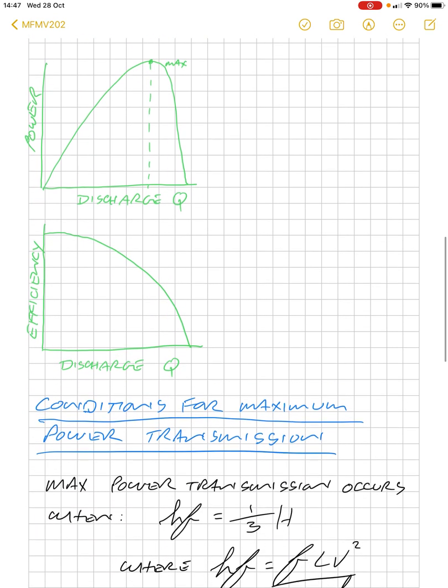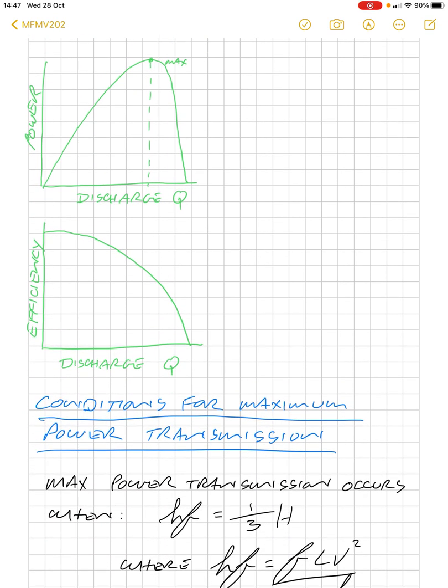And then thirdly, we have a graph showing efficiency and discharge. So, our efficiency will be maximum at some point, and then it will decrease from there.